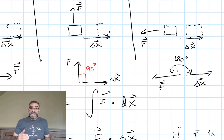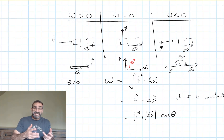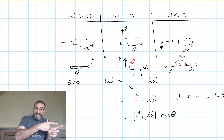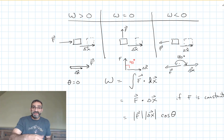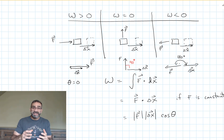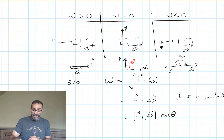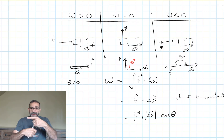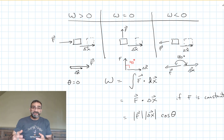A force causes the object to speed up if it increases its kinetic energy, like in the first case where it pushes in the same direction — doing positive work. If the force is perpendicular to the direction of motion, it does zero work and can only change direction, not speed. If the force is slowing the object down — like friction pushing back opposite to motion — it does negative work on the box.